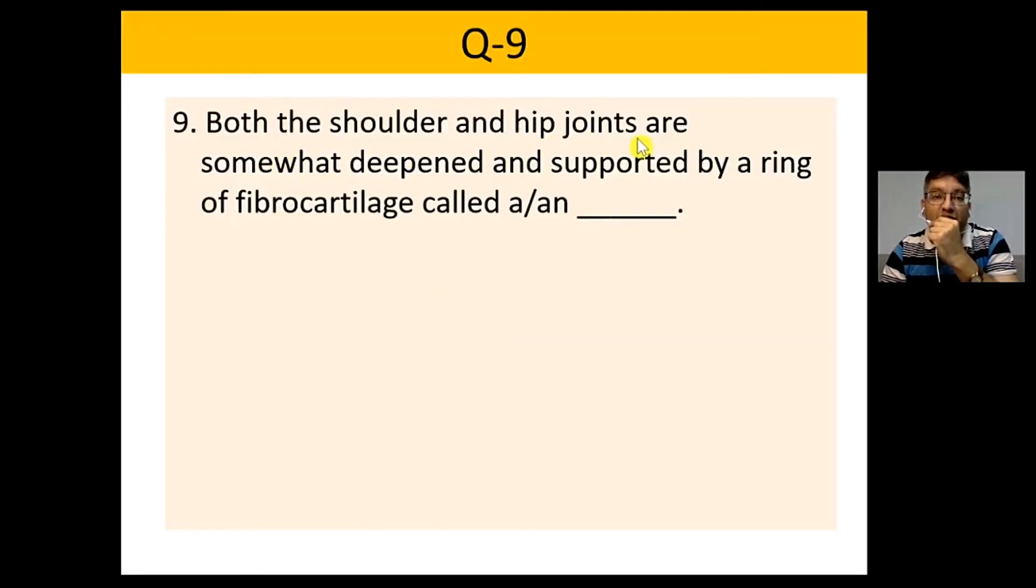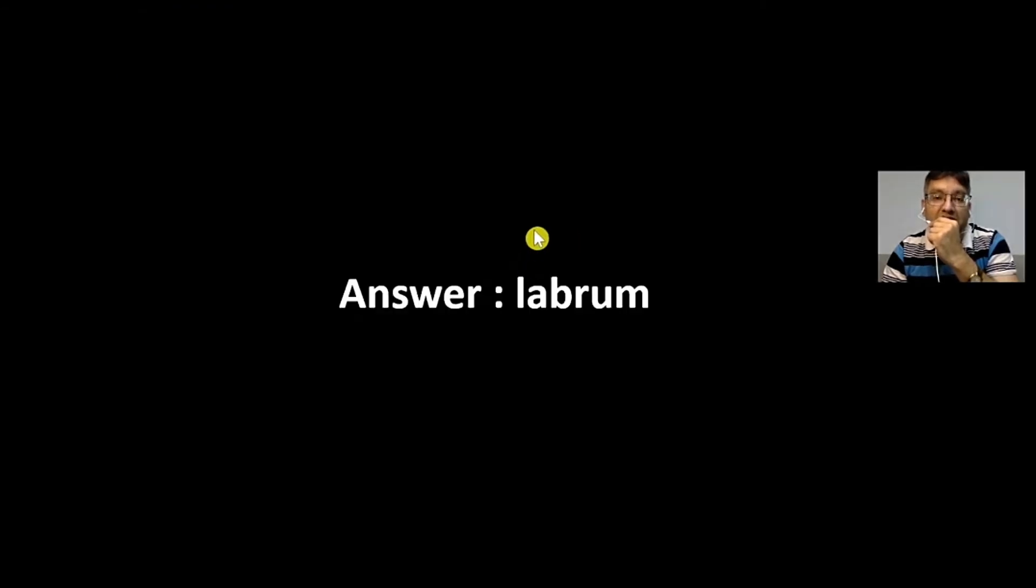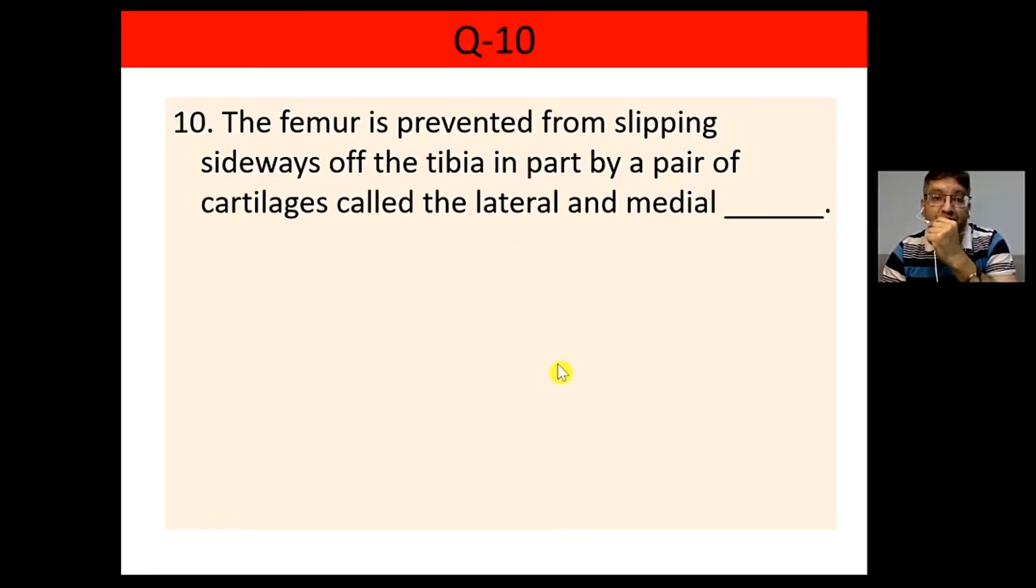Both the shoulder and the hip joints are somewhat deepened and supported by a ring of fibrocartilage called a labrum. For the shoulder it's called the glenoid labrum; for the hip, the acetabular labrum. The femur is prevented from slipping sideways off the tibia in part by a pair of cartilages called the lateral and medial menisci.